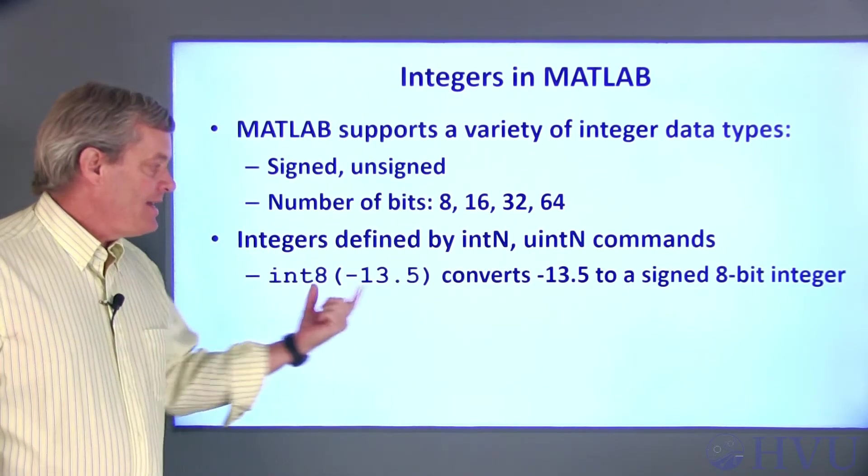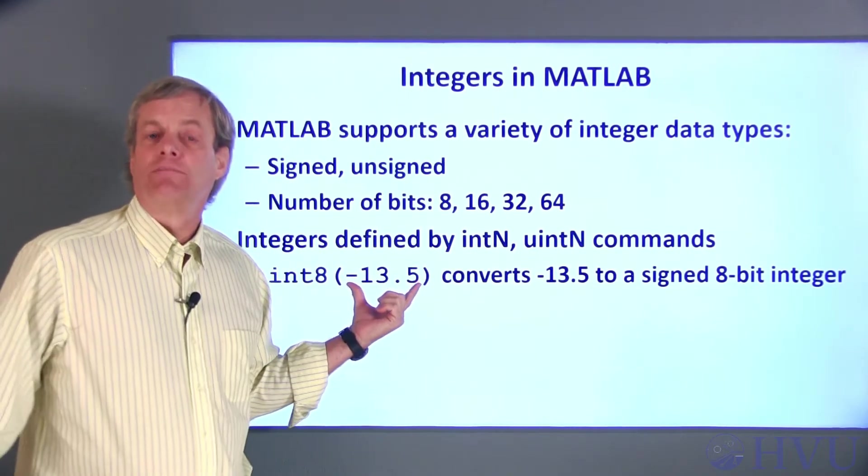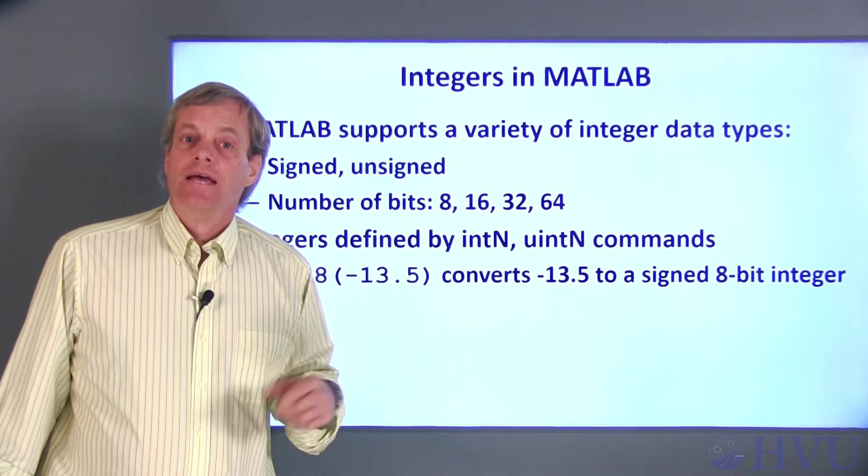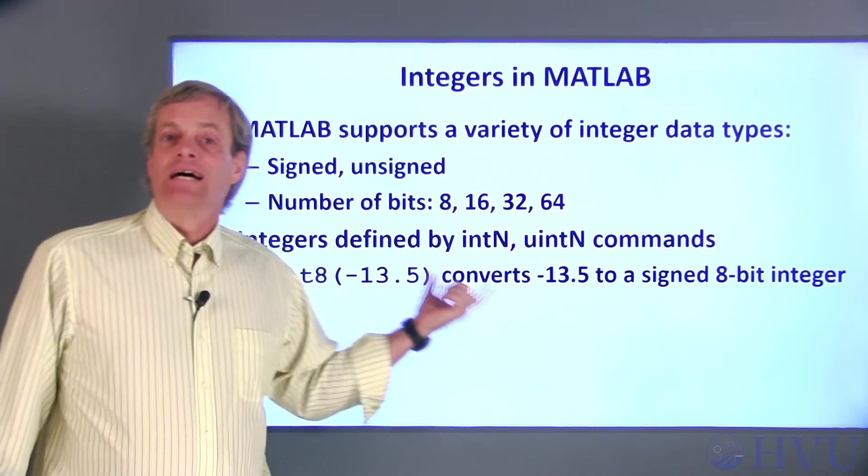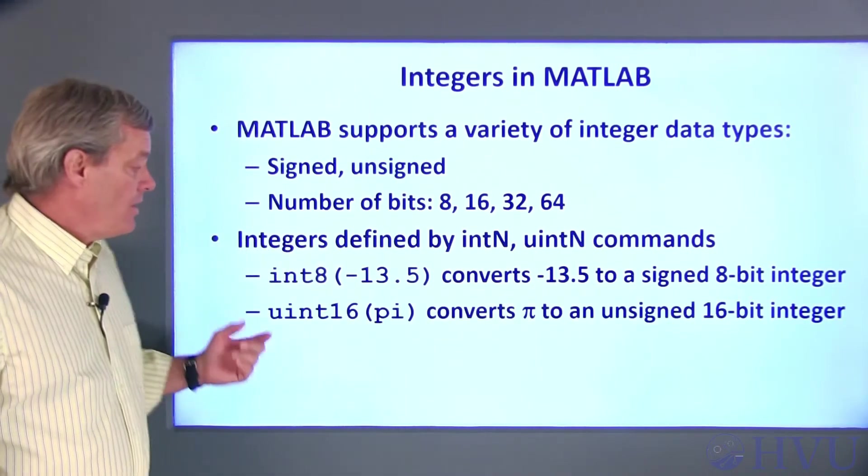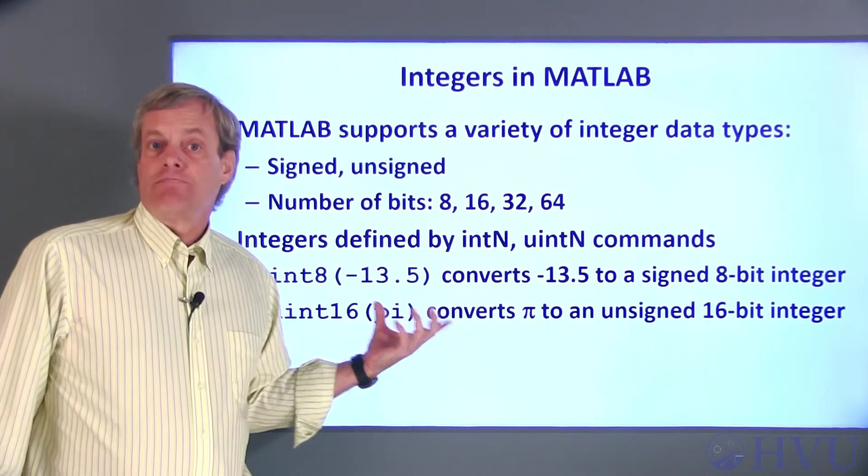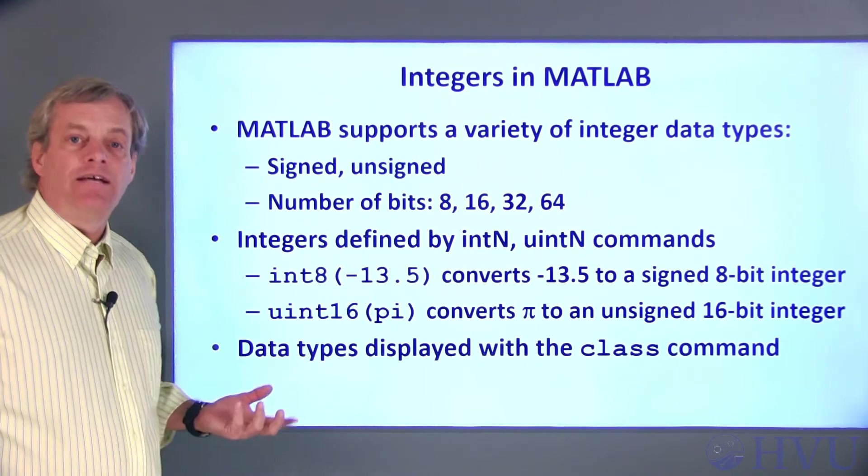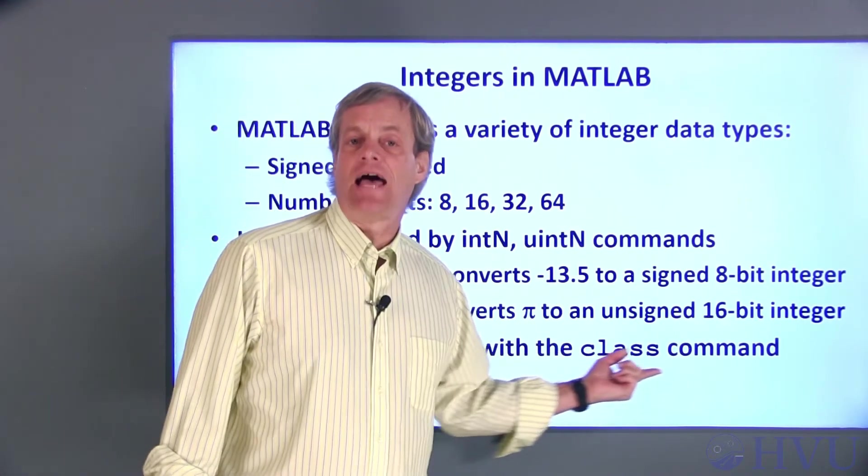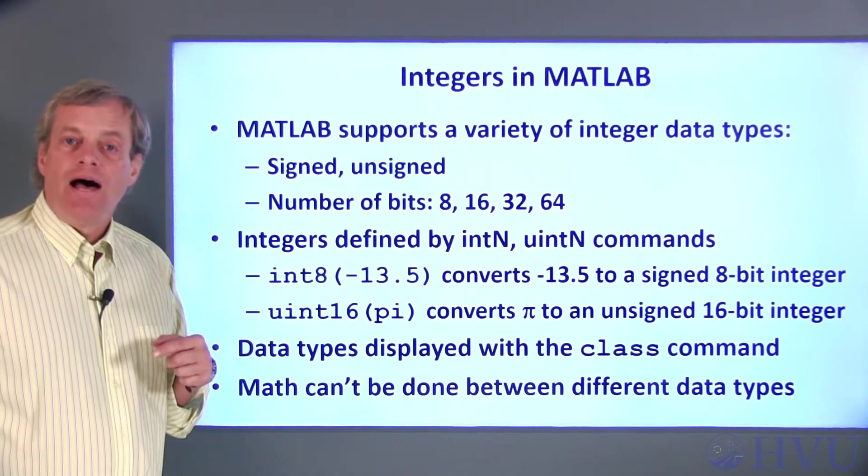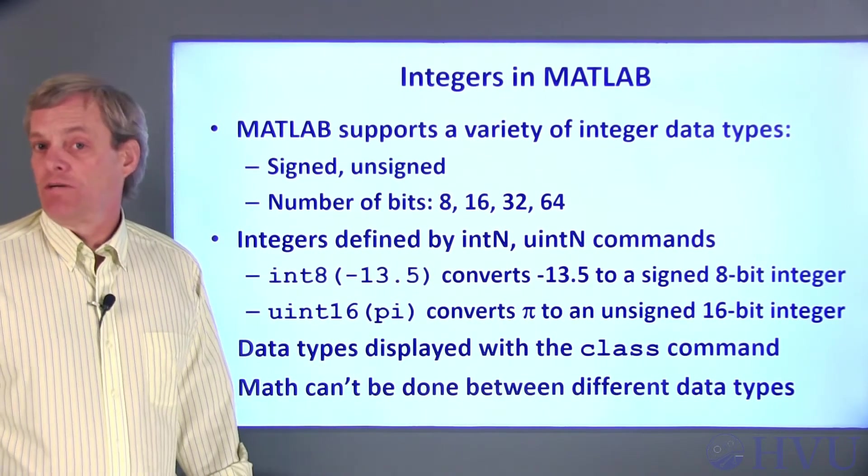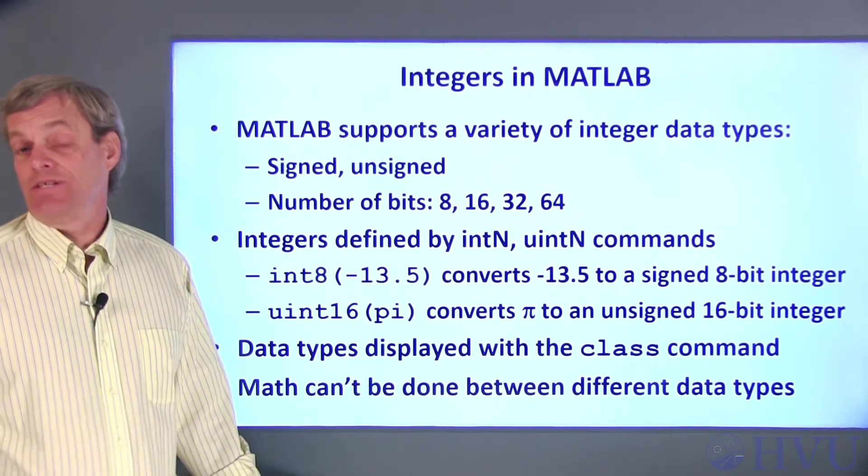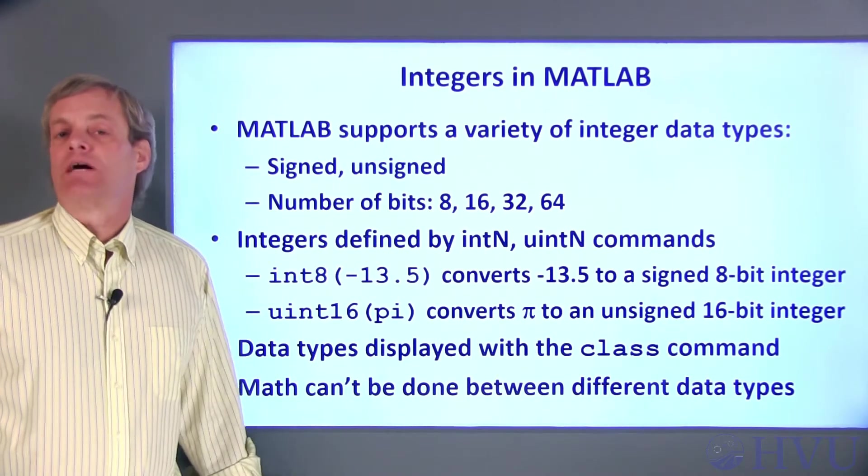So, int8 of negative 13.5 converts the number negative 13.5 to a signed integer. The result will be negative 13. If I converted negative 13.5 to an unsigned integer, the result would be positive 13. uint16 of pi converts pi to 3. It's an unsigned 16-bit integer. The type of data associated with a variable can be displayed with MATLAB's class command. One thing to keep in mind is that MATLAB won't do arithmetic with variables that have different data types. So you can't, for example, add an 8-bit signed integer to a 16-bit unsigned integer.